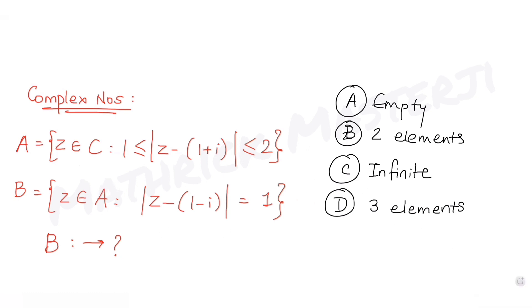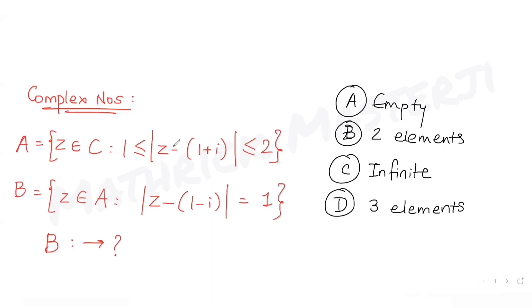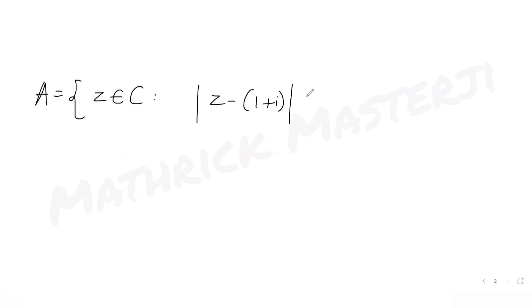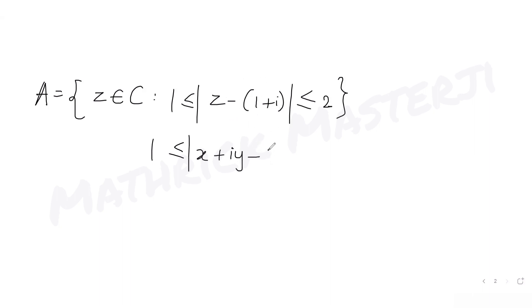Let's solve for set A first, where z belongs to the complex numbers and the condition is: mod of z minus (1 + i) goes from 1 to 2. Substituting z = x + iy, we get: 1 ≤ mod of (x - 1) + i(y - 1) ≤ 2.